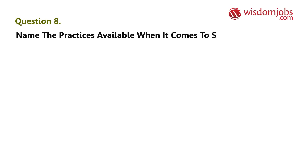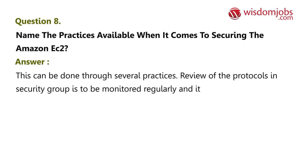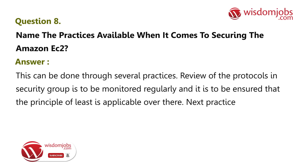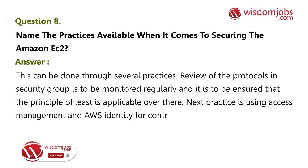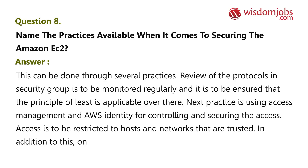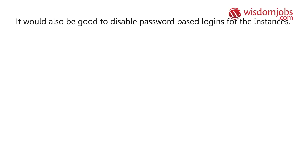Question 8: Name the practices available when it comes to securing Amazon EC2. Answer: This can be done through several practices. The protocols in the security group are to be monitored regularly and the principle of least privilege is to be ensured. Next, use AWS Identity and Access Management for controlling and securing access. Access should be restricted to trusted hosts and networks, only required permissions should be opened, and it is good to disable password-based logins for the instances.